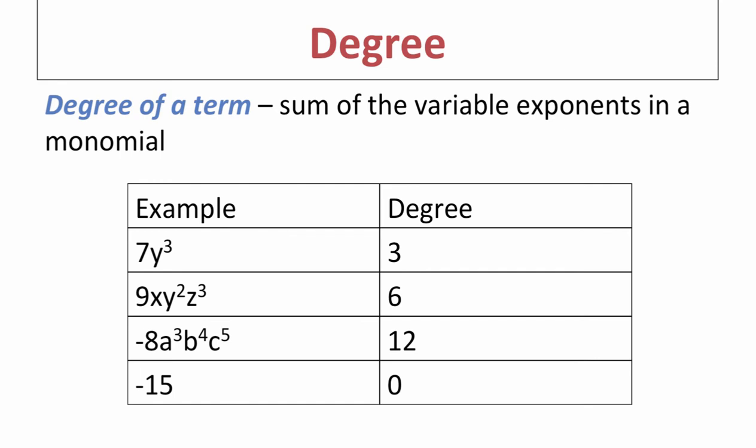The word degree can be used in two different ways when describing an expression. We can describe the degree of just one specific term or monomial, and we can also describe the degree of the entire expression — those are two different things. In your final work on classifying, you will be determining the degree of the entire expression.